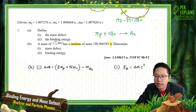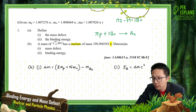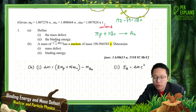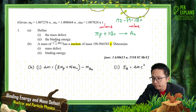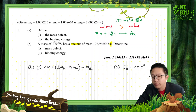To find the mass defect, we take the mass of the constituent nucleons before they combine, minus the mass of the nucleus. We know that the mass of the nucleons is always more than the mass of the nucleus, so we subtract the smaller from the larger.